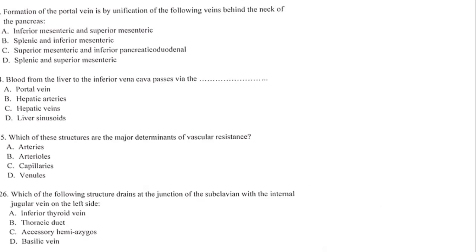Formation of the portal vein is by the unification of veins behind the neck of the pancreas. The veins that unite are the splenic vein and the superior mesenteric vein, which come together to form the portal vein.